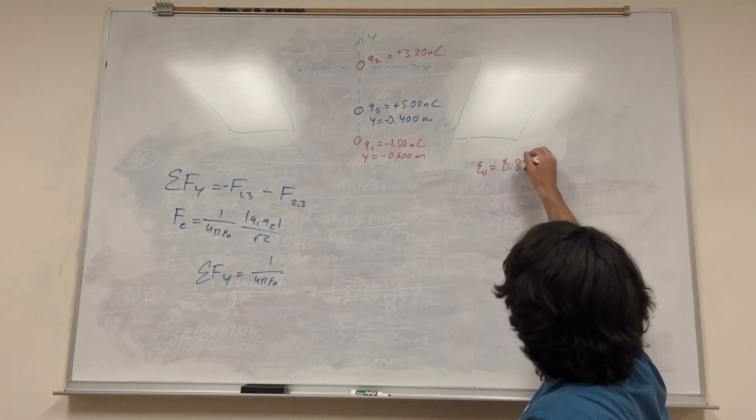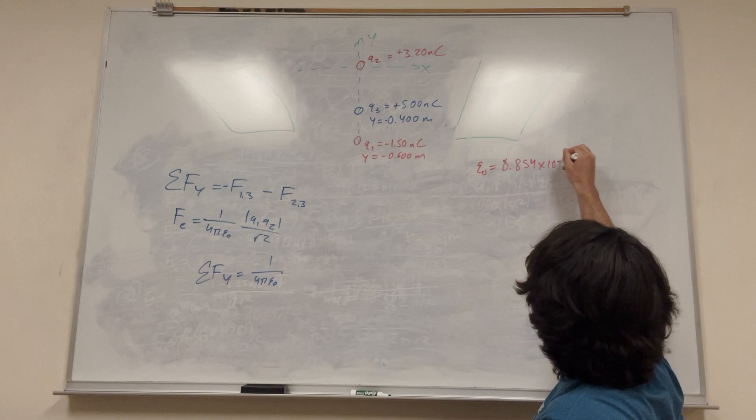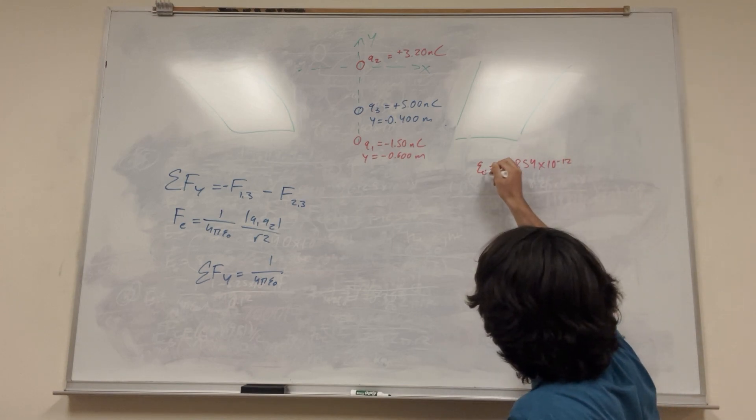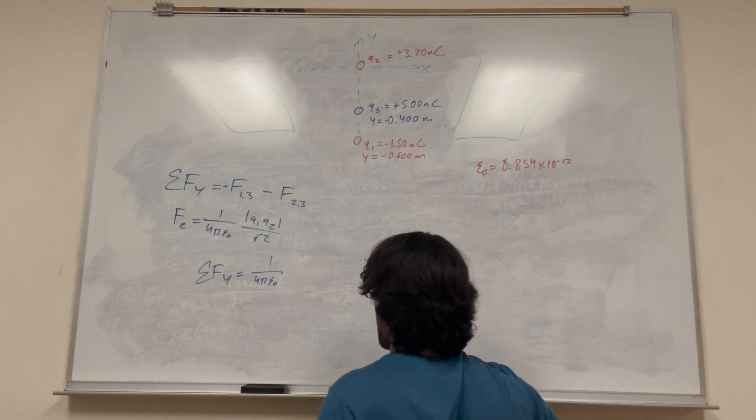I'm going to write that over here. So it's 8.854 times 10 to the negative 12. That's just a constant you should have written down somewhere.